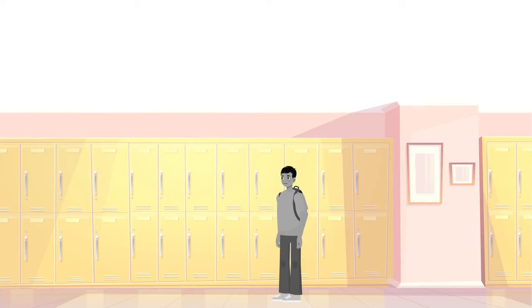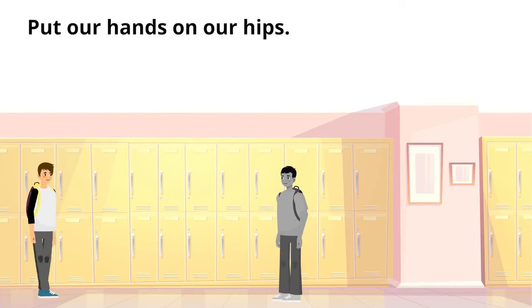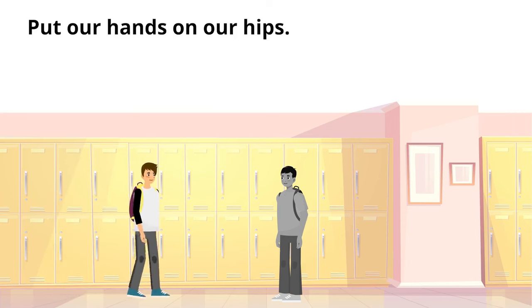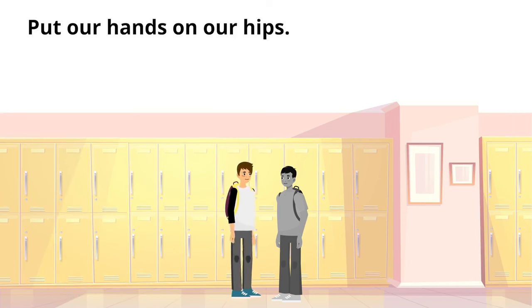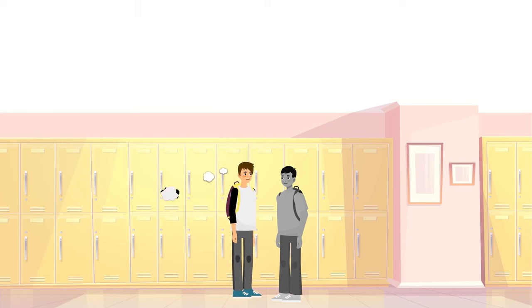One trick to help us keep personal space is to put our hands on our hips. If we are touching someone, then we are too close and should take a step back.